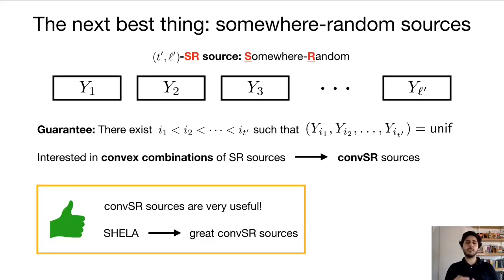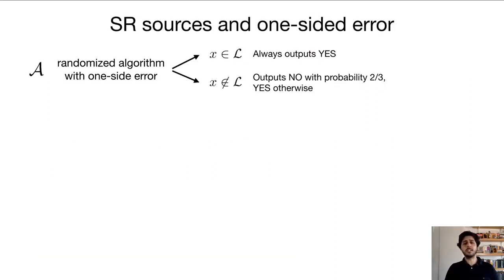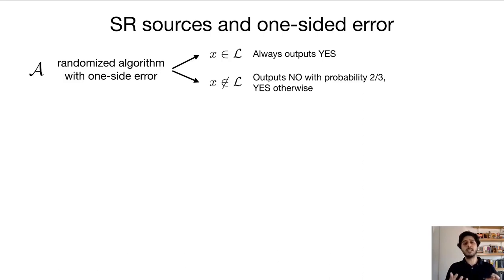For the rest of the talk, we'll show first that SoMa random sources are really useful — I'll show some concrete applications — and second, I'll show that starting with a SHELA source with very bad parameters, we can extract great SoMa random sources, so we can run a lot of applications starting with SHELA sources. The most basic application of SoMa random sources is to the simulation of randomized algorithms with one-sided error. As an example, we have a randomized algorithm with one-sided error for deciding a language L: when it receives some x in the language, it always outputs yes, but when x is not in the language, the algorithm may be incorrect with probability one-third.